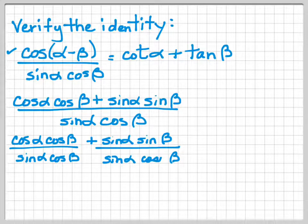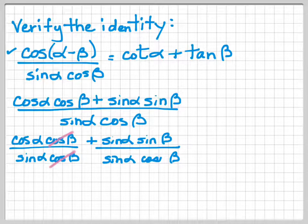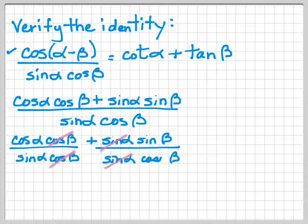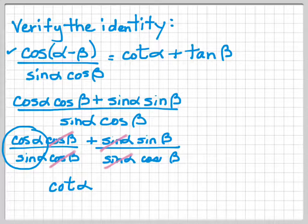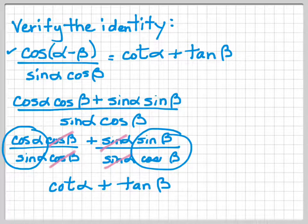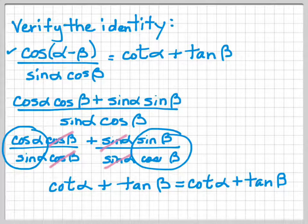One thing to remember: you can only pair up the alphas and the betas — you can't pair up a sine alpha and a cosine beta. But I can cancel out cosine beta over cosine beta here, and sine alpha over sine alpha here. So I'm left with cosine alpha over sine alpha, which is cotangent alpha, and sine beta over cosine beta, which is tangent beta. And that equals what I'm looking for: cotangent alpha plus tangent beta.